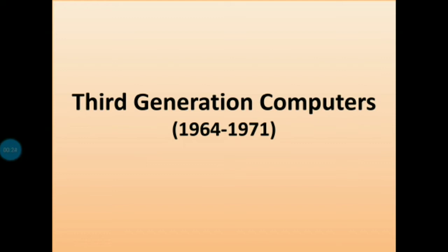So first of all, the duration — what is the duration of third generation computers? The duration of third generation computers is 1964 to 1971.